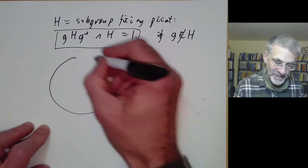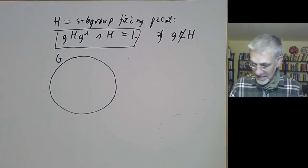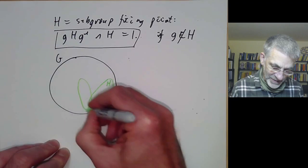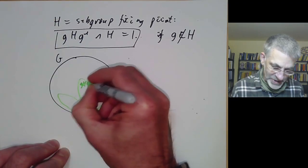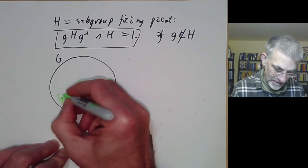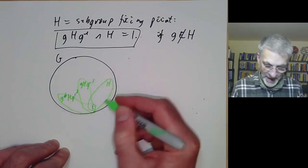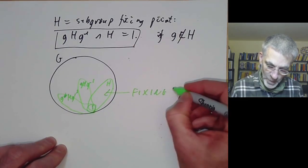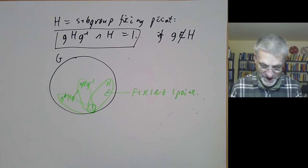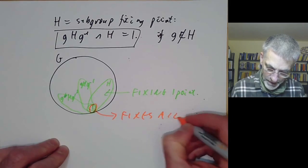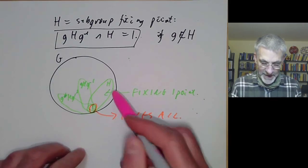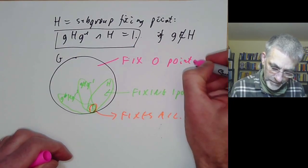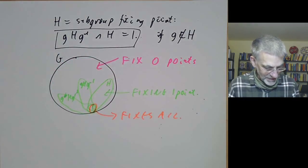From this we get a picture of what a Frobenius group looks like. Imagine all the elements of G sitting inside some set, with a subgroup H containing the identity element, and H has all these conjugates — gHg⁻¹, g'Hg'⁻¹ — and all these conjugates intersect only in the identity element. So here we have elements fixing one point, the identity element fixes all points, and all the remaining elements not in any conjugate of H and not the identity must fix no points.